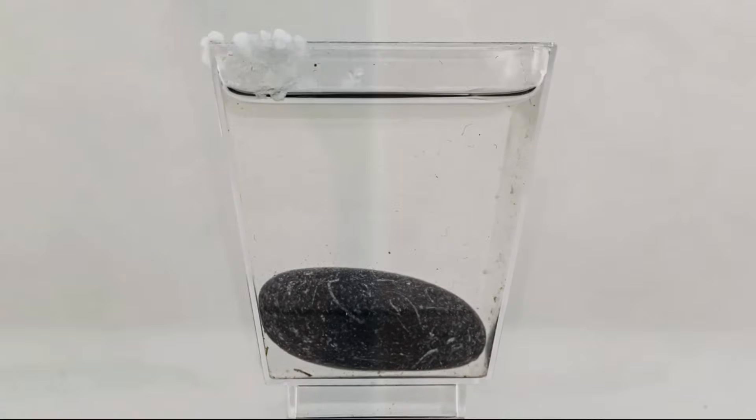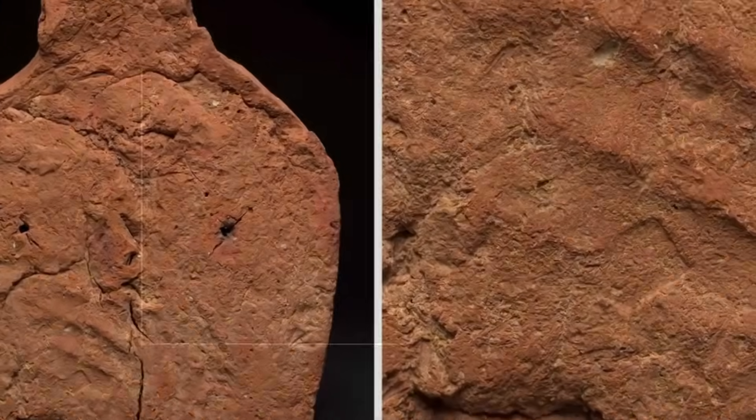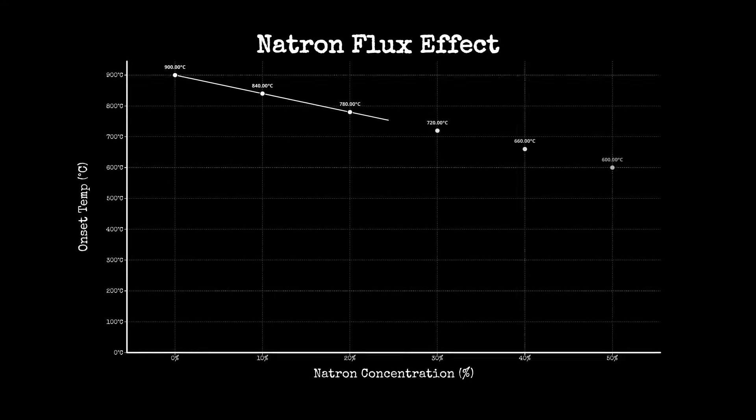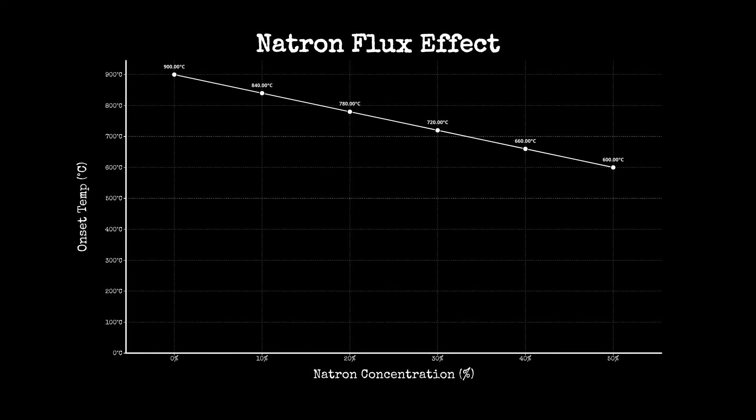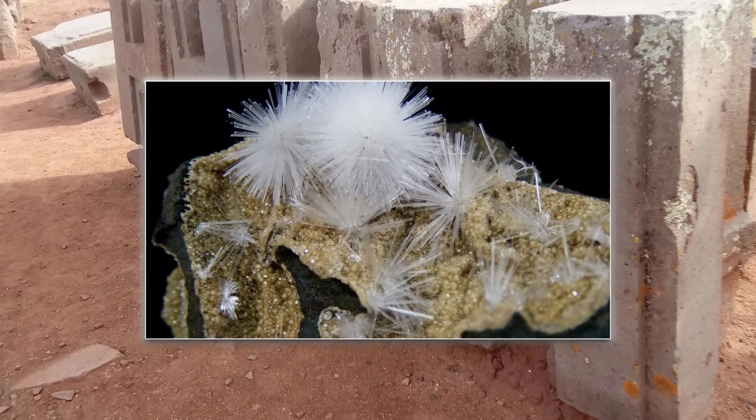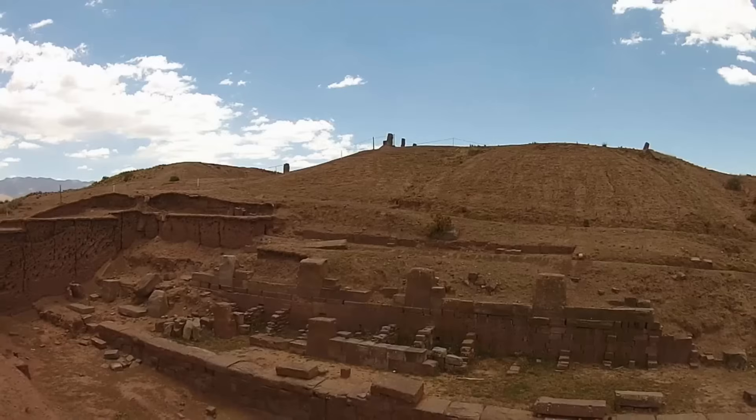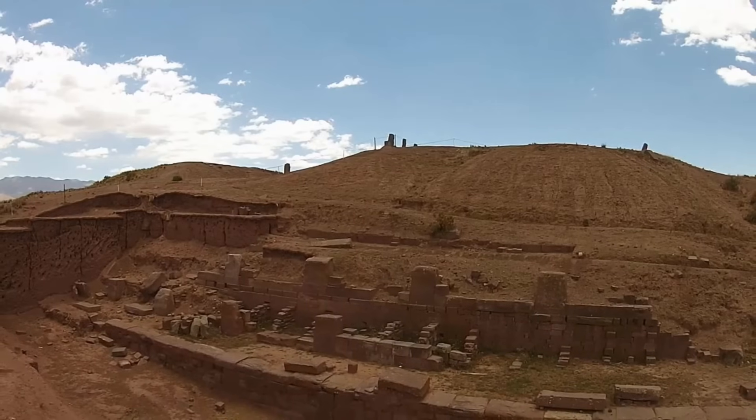Sodium carbonate is the linchpin. Known from ancient Egyptian mortars but rare in the Andes, natron acts as a flux, lowering the temperature for geopolymerization. Its presence in Puma Punku's sandstone and absence in local deposits indicates that builders either imported or synthesized it. This would have allowed them to cast blocks of any size, sidestepping the need for massive quarrying and transport.